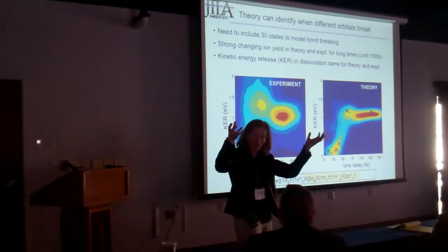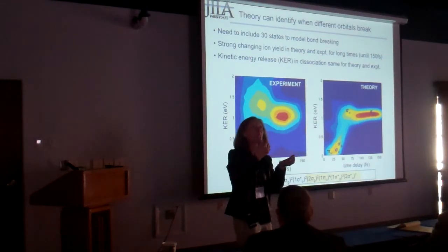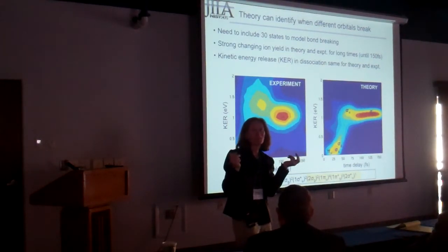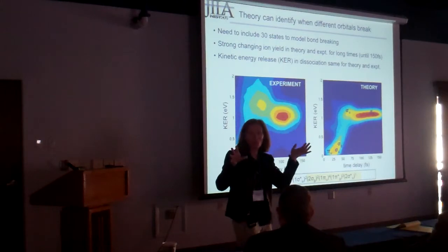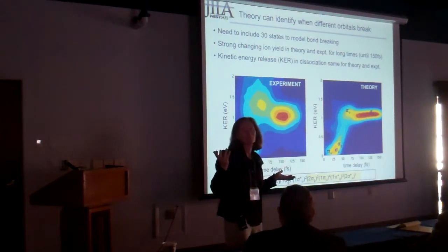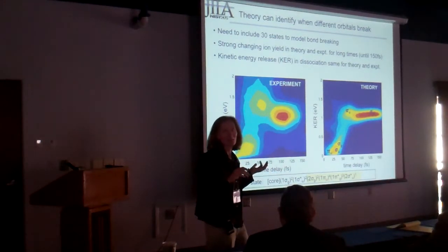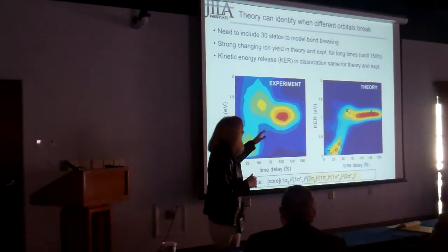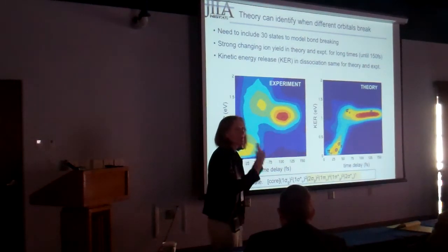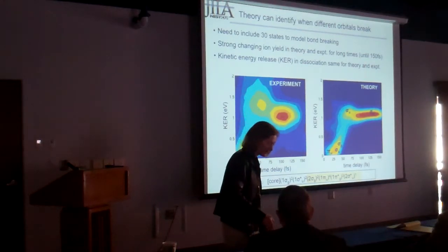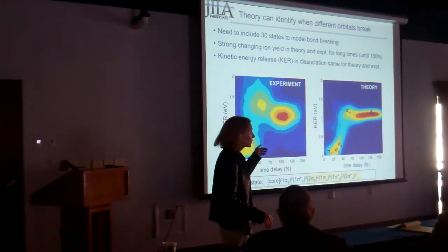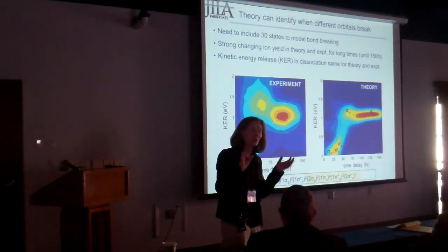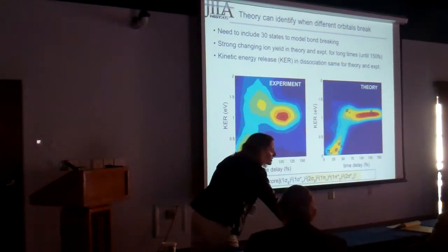We know the electron cloud will be distributed in a different way as the bond stretches, and when you pluck it out with a strong field it's going to come from different regions — it's a multi-electron density problem. But there was such a good agreement between theory and experiment that it gave us a way of thinking about it, and of course this answer differs from what the electrostatic potential energy curve would predict.